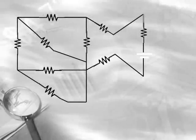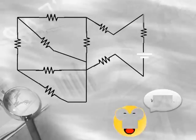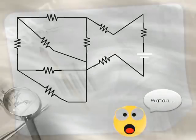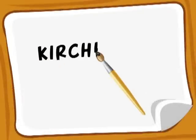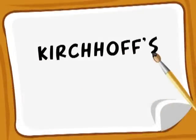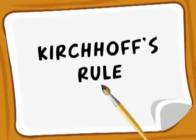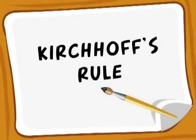Sometimes, circuits can get pretty complicated. For example, look at this. So how can we solve this in a simpler way? Two simple rules called the Kirchhoff rules help us make life simpler.